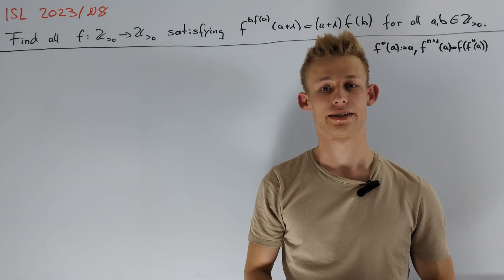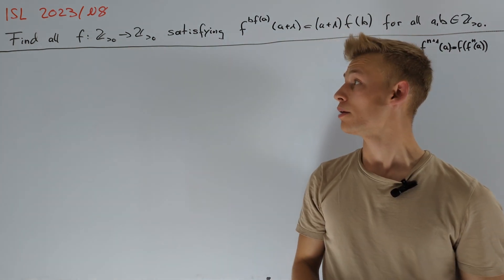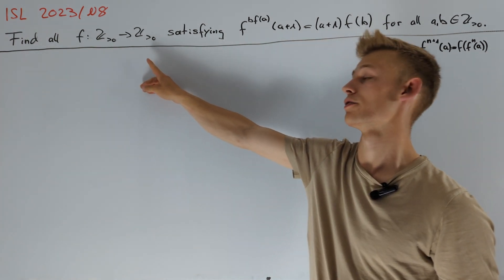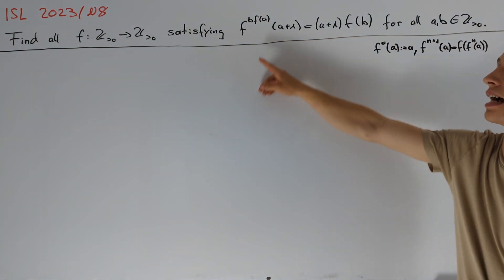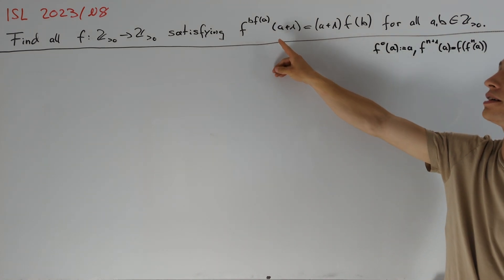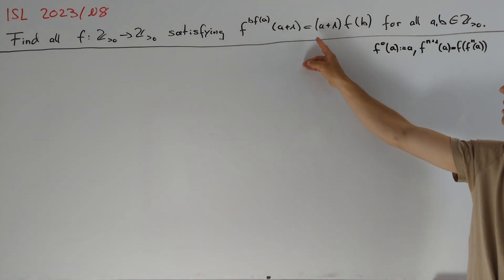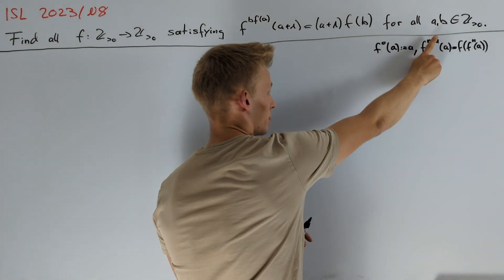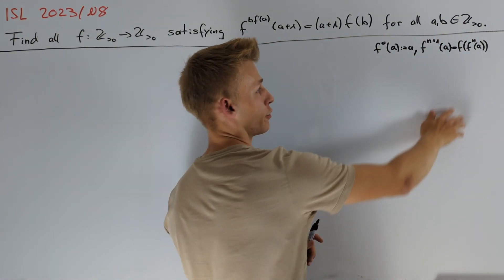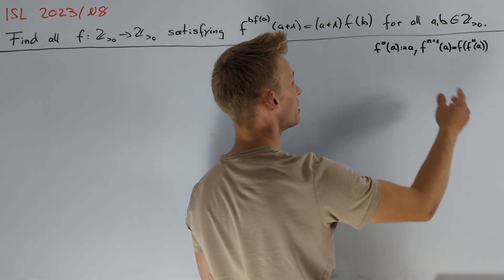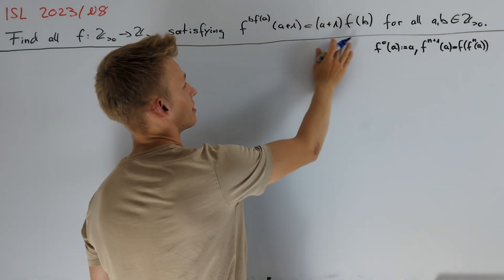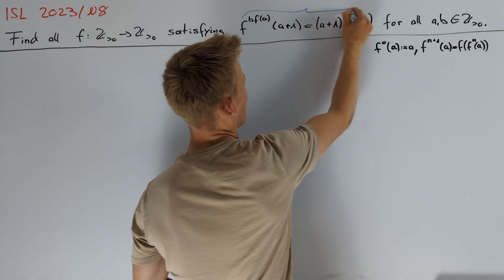At first, let's take a look at the problem statement. We are asked to find all functions from positive integers to the positive integers satisfying f^(bf(a))(a+1) = (a+1)f(b) for all positive integers a and b. Here, f^n(a) means applying f n times on a. Let's denote the assertion that this equation here is true by P(a,b).